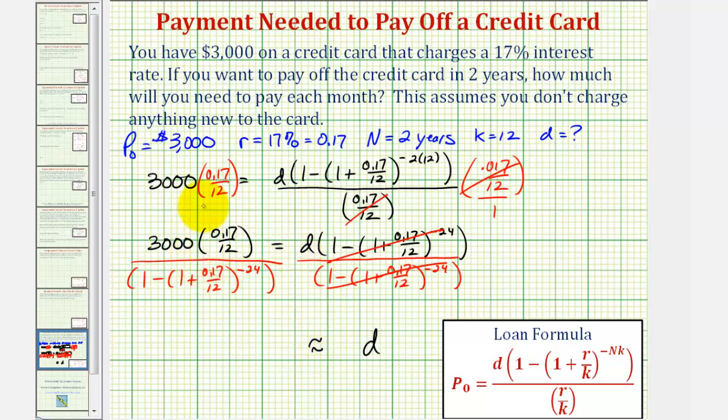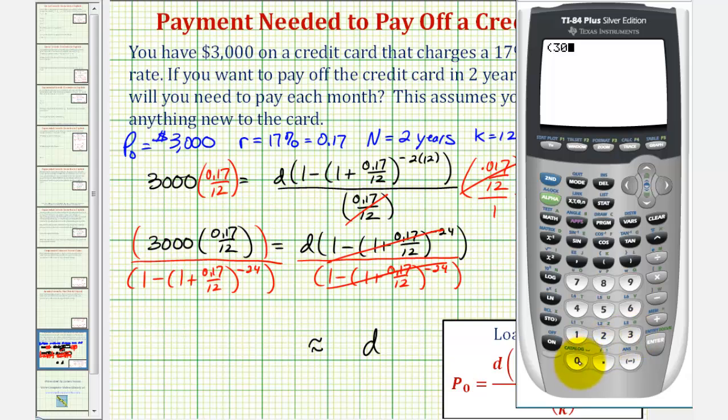When entering this into the calculator, we will include another set of parentheses for the numerator. So we have open parenthesis, 3,000 times 0.17 divided by 12, close parenthesis for the fraction, close parenthesis for the numerator, divided by open parenthesis for the denominator. And then we have one minus the quantity one plus 0.17 divided by 12, close parenthesis. This is raised to the negative 24th power. And close parenthesis for the denominator.